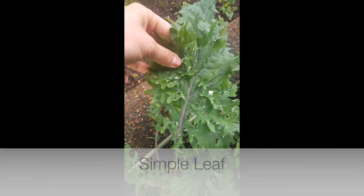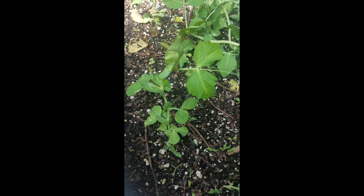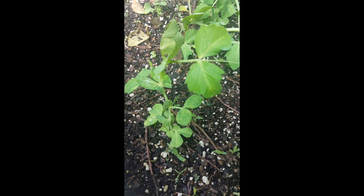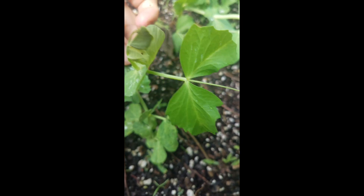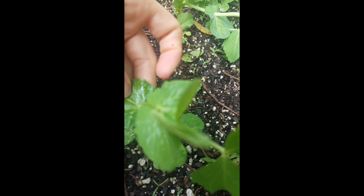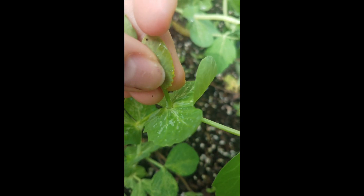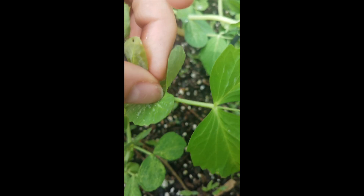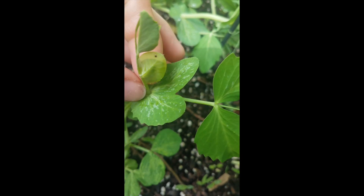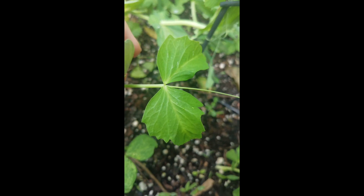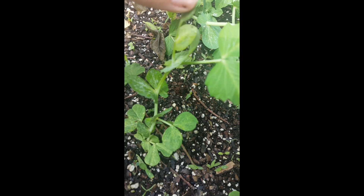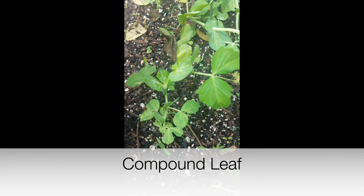Here we have the snap pea plant. These leaves may look like simple leaves, but the trick is to find the axillary bud. When we find the axillary bud right here — this little itty bitty thing right there — you can see that there are two leaves that come off this axillary bud, as well as another stem and leaf, making the snap pea plant a compound leaf plant.